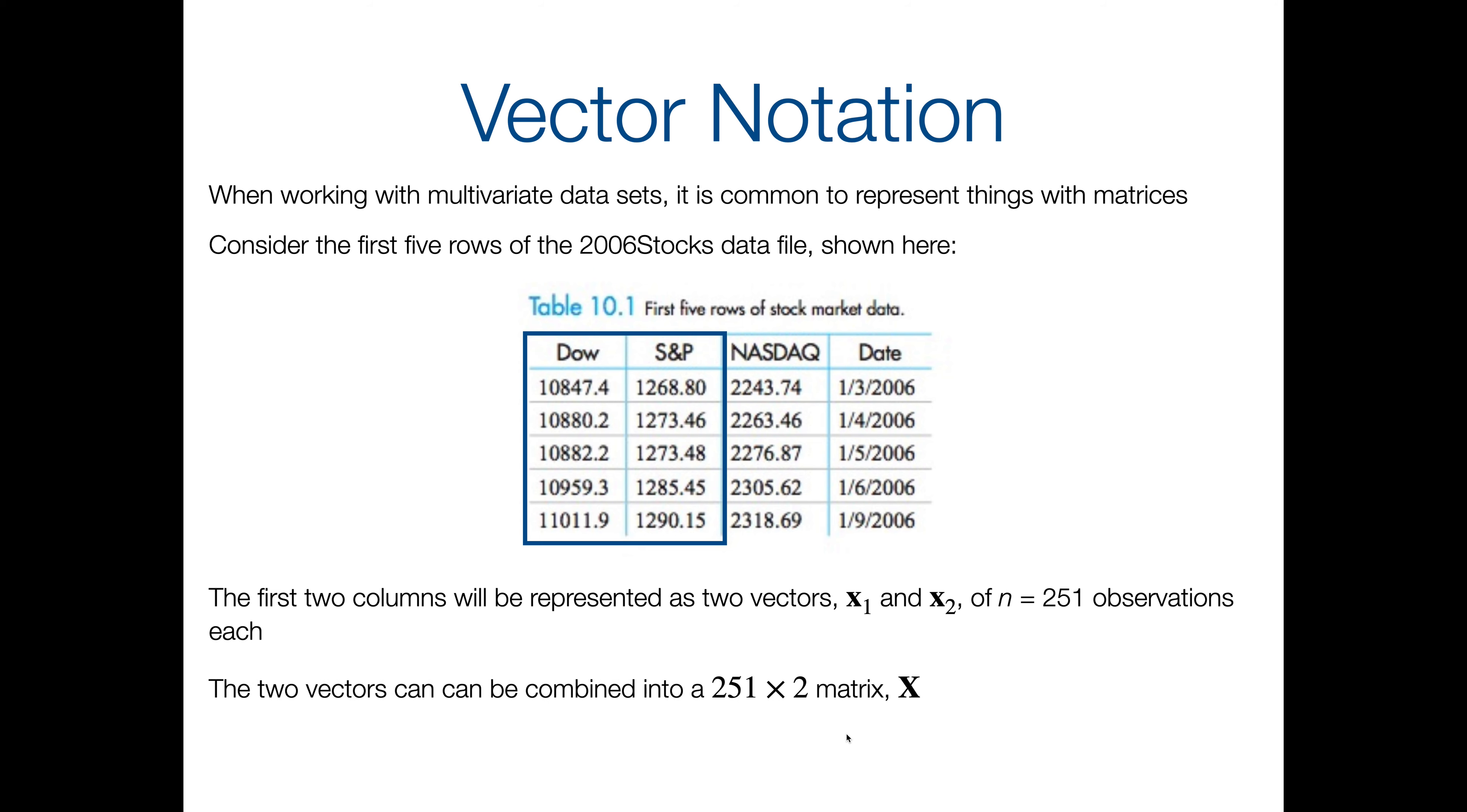Where did the 251 come from? Well, we're only looking at the first five rows of this data set just to get a picture of it, but the data set has 251 observations because that's how many business days there were in 2006. And those two vectors could be combined into what would then be a 251 by 2 matrix, which we're going to call capital X, and again it's bold. So vectors usually get lowercase bold letters, matrices get uppercase bold letters. A single number would get a lowercase not bold letter. And 251 by 2, so when we talk about matrices, it's always rows by columns.